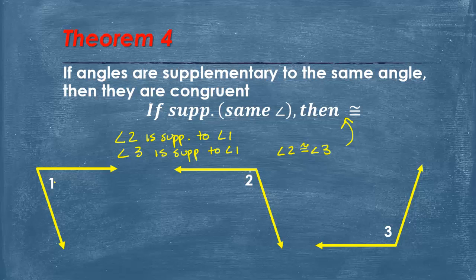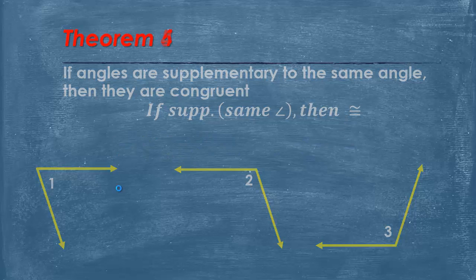So if you have two separate angles that are supplementary to the same angle, then they are both also congruent. Make sense? It should be easy enough.